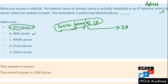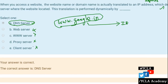Web server — Apache is an example of a web server. A proxy server is somewhat similar, in that it sends to a firewall or something. Client server is another option, but that's not the right answer here.